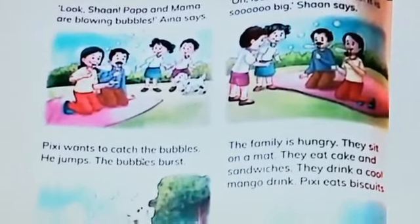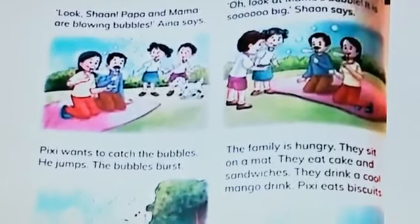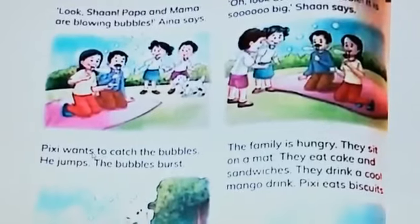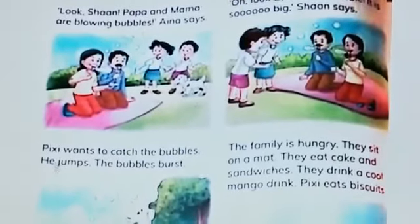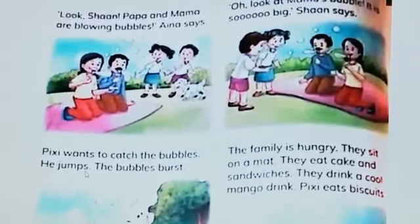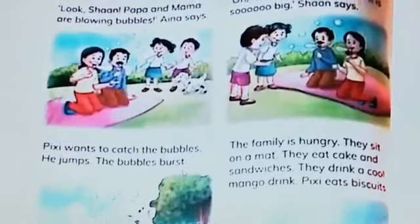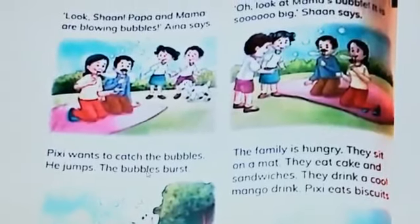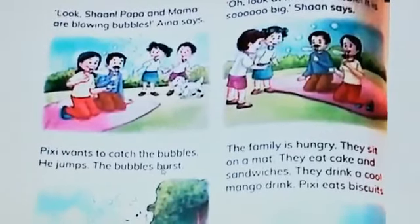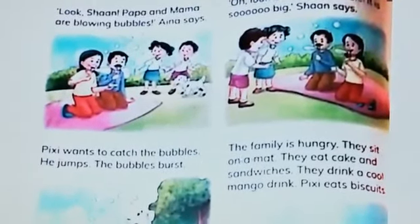Pixie wants to catch the bubbles — Pixie bubbles ko pakadna chahta hai. He jumps — voh daudta hai, koodta hai. The bubbles burst — lekin jo bubbles hain voh burst ho jaate hain, yaani phood jaate hain.